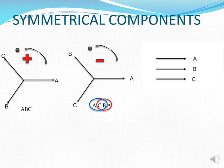The last one is the zero phase sequence. Compared to positive and negative sequences where all phases are 120 degrees apart, in the zero phase sequence your A, B, and C phases are all equal in magnitude and they are at the same angle.